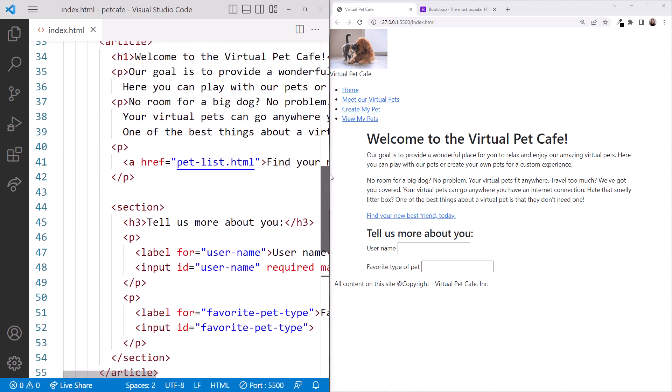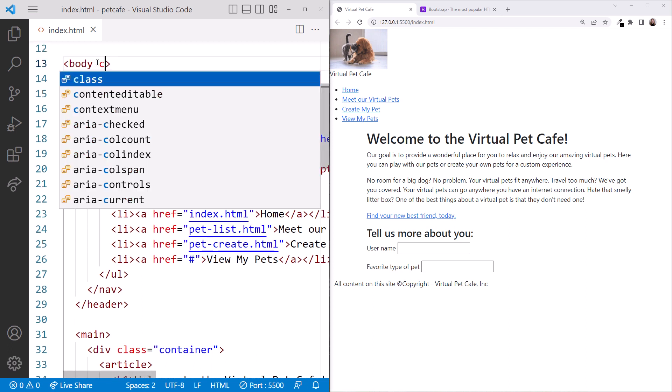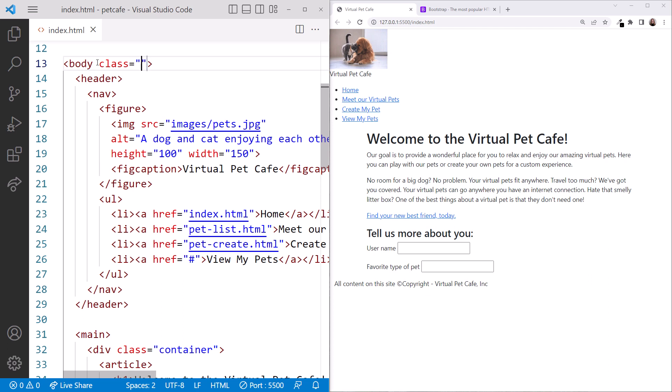In VS Code, scrolling up, let's add a color for the entire body of the page. On the body element, we'll add the class attribute and set it to BGLight. That sets the background to a very light gray color.